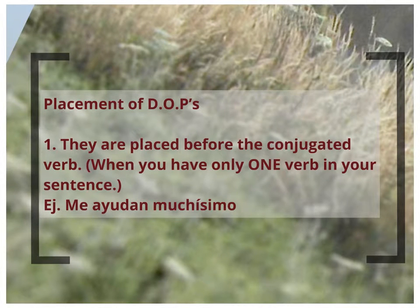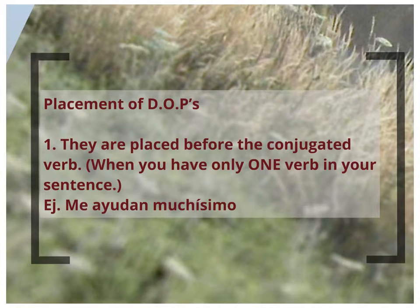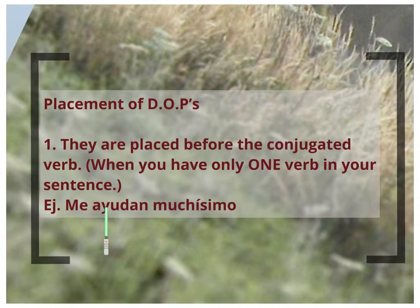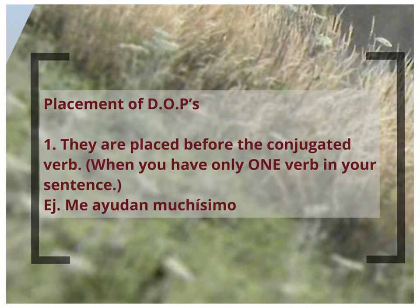For placement: where there's one verb, the DOP is placed right before that first conjugated verb. Some students get confused about where to start reading their sentences. When translating, you start with 'ayudan.' 'Me ayudan muchísimo' — it doesn't make sense to say 'me, they help a lot.' It makes more sense in English to say 'they help me a lot.' So the DOP bounces — we put our DOP right in front of the first conjugated verb.